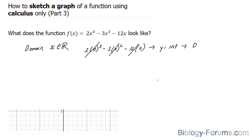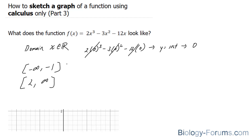We also learned in part one that the function was increasing from negative infinity to negative 1, and also increasing from 2 to positive infinity. And between negative 1 and 2, the function was decreasing.